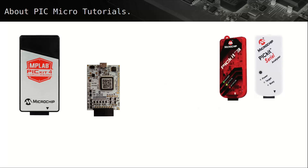The older PICkit 2 and 3 may also be used with similar PIC devices detected by these two programmers. These older programmers are unfortunately not featured in any tutorials, but their connections and circuit requirements are covered in the breadboard connections video, allowing the series to be followed with other PIC devices and adjustments made for the specific programmer and PIC device used.